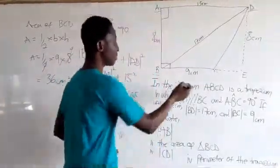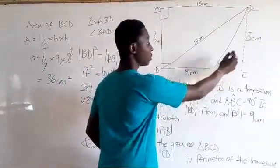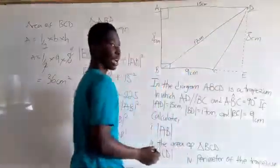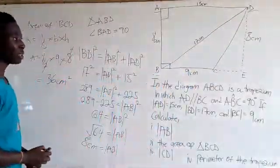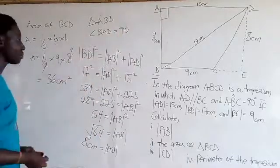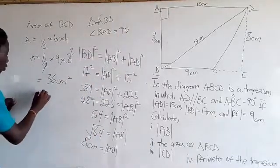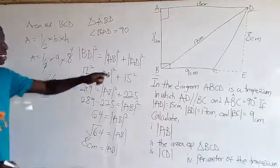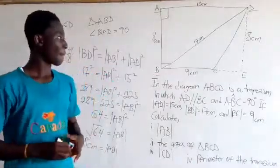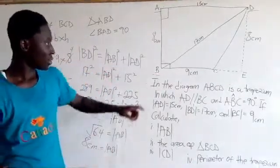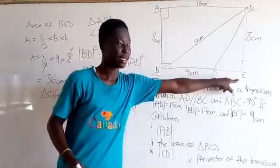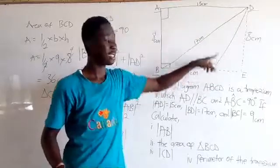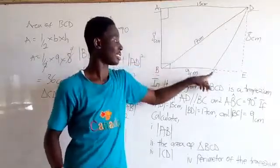We also need to find line CD. Looking at CD, we can find it using triangle CDE. We will consider triangle CDE and use it to find the length of line CD.